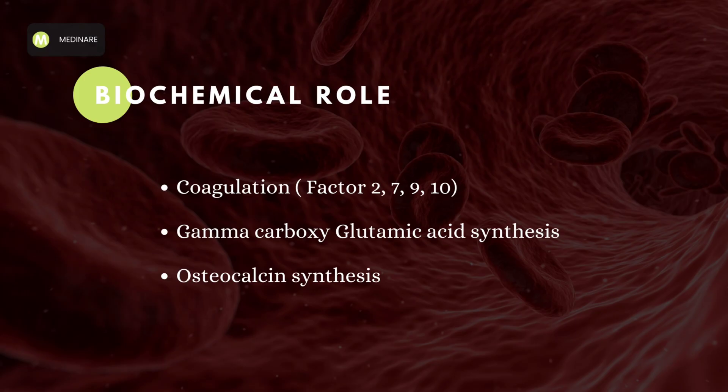Now let's look at the biochemical role of Vitamin K. Vitamin K has its primary function in coagulation. The coagulation factors which are dependent on Vitamin K are factor 2, factor 7, factor 9 (Christmas factor), and factor 10 (Stuart Power factor). The gamma carboxylation of glutamic acid also requires Vitamin K as a cofactor. If you want a detailed explanation about gamma carboxylation of glutamic acid, please let me know in the comment section below and I will make a video about it.